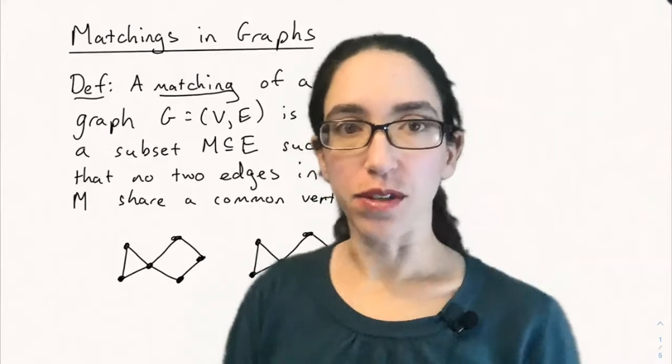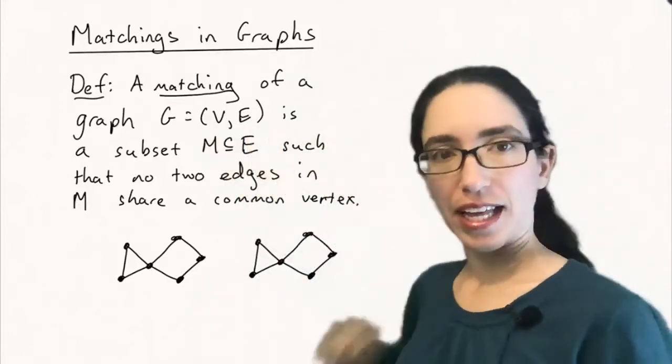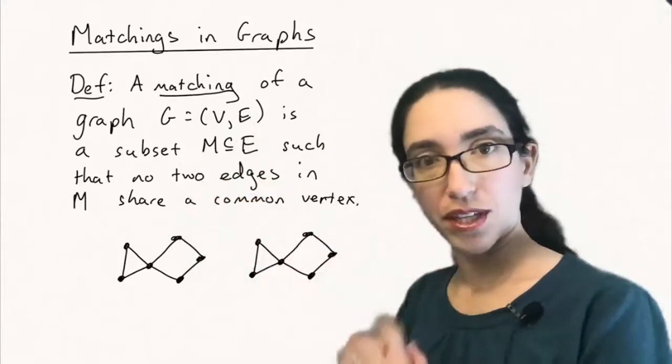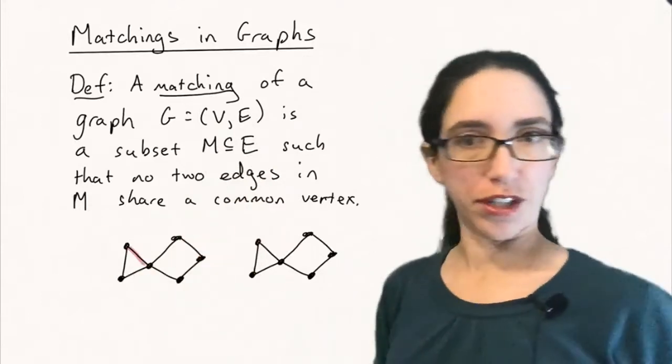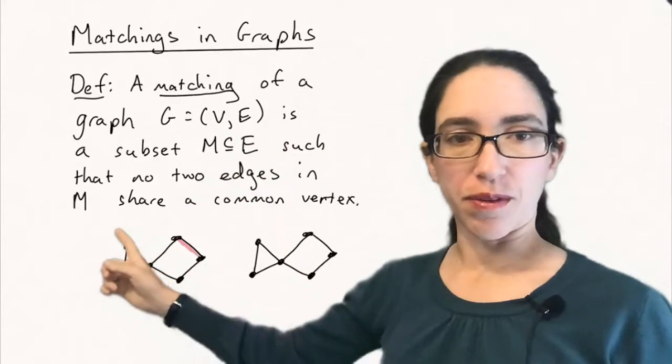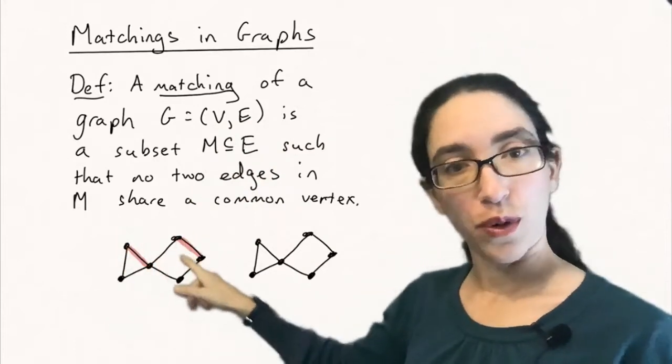A matching of a graph consisting of a vertex set v and an edge set e is a subset m of the edge set, so you pick some subset of the edges, such that no two edges in m share a common vertex. A matching can be thought of as a way of pairing off some of the vertices using the edges in a one-to-one way.